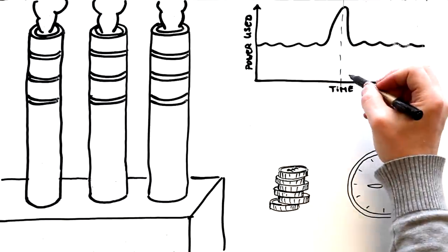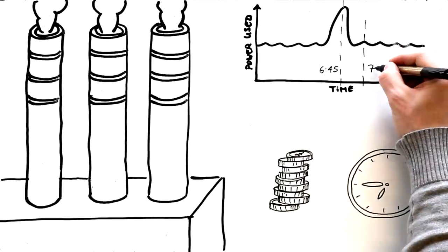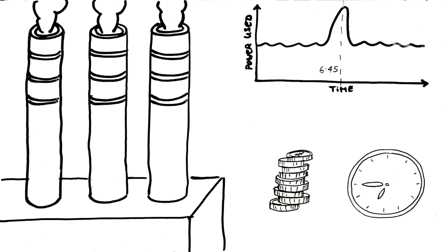So putting the kettle on during half time of a football match will be a lot more expensive than putting it on 30 minutes into the second half. This will encourage people to use more electricity at off-peak times.